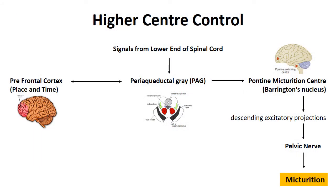This image shows how the micturition reflex is controlled by higher centers. Signals from the lower end of the spinal cord go to the periaqueductal gray, which is at the level of the midbrain. From the PAG, signals simultaneously go to the prefrontal cortex and the pontine micturition center, also known as Barrington's nucleus. The prefrontal cortex decides the time and place for micturition; if appropriate, it sends a signal to the PAG, which again sends a signal to the pontine micturition center and micturition can occur. From the pontine micturition center, signals go through descending excitatory projections to the pelvic nerve, and as discussed, the pelvic nerve is the only efferent in the micturition reflex — stimulation of the pelvic nerve will cause micturition.